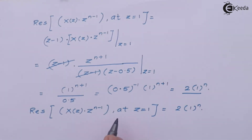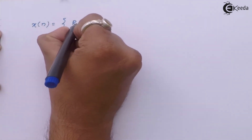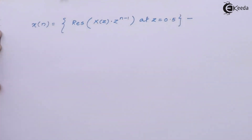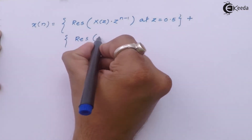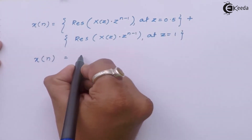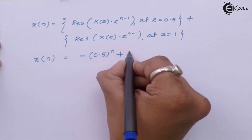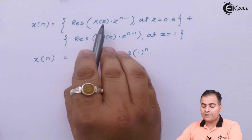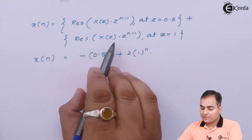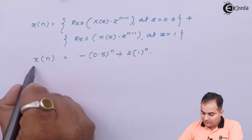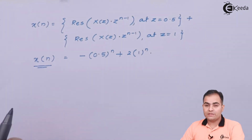The final step is to add both residue values — the residue at Z = 0.5 and the residue at Z = 1. Adding them together gives the result, which is the inverse Z-transform of X(Z) using the residue theorem.